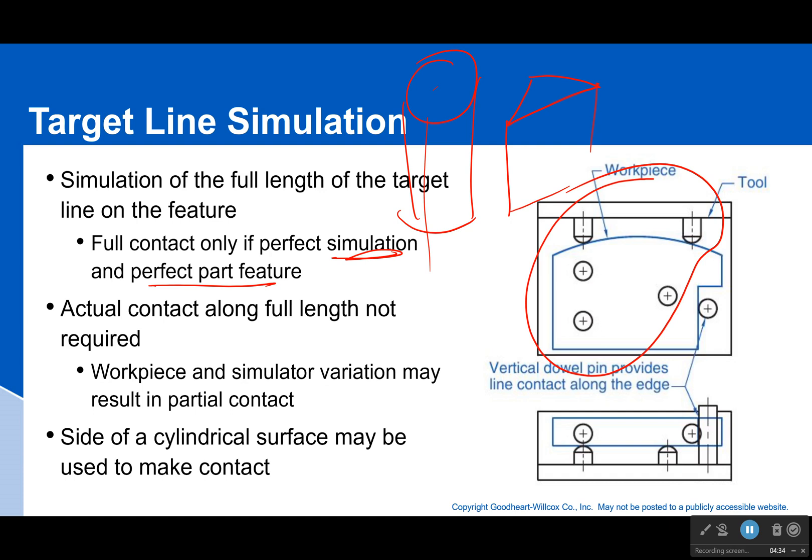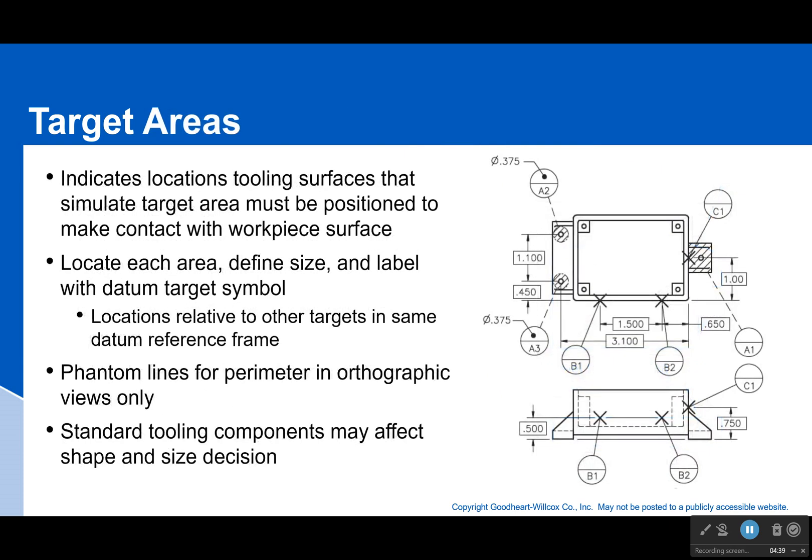Finally, target areas. You'll see them right here. These are not perfect circles with a solid line—they are actually having a phantom line that's then hashed in. So long-short-short-long-short-short, and then I hash it in.